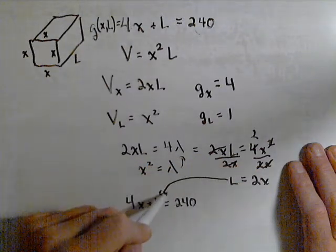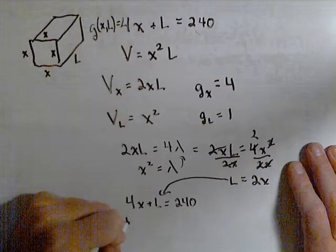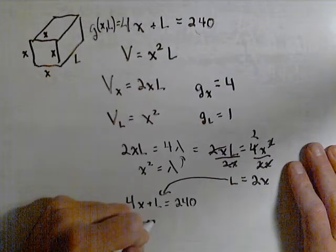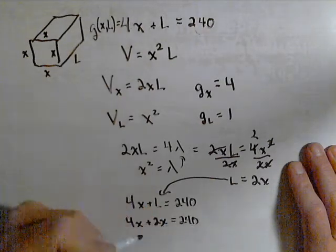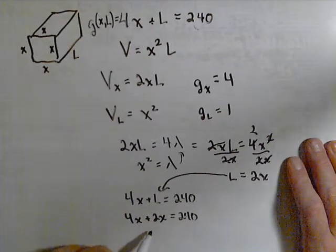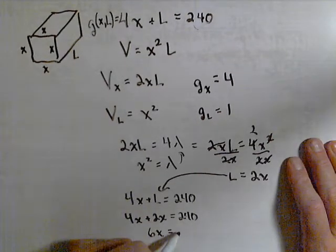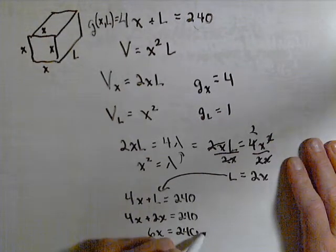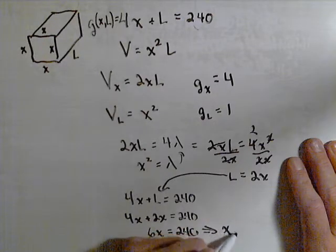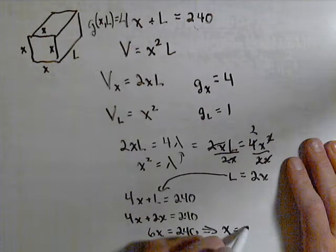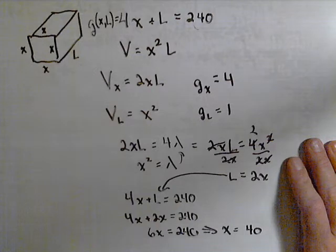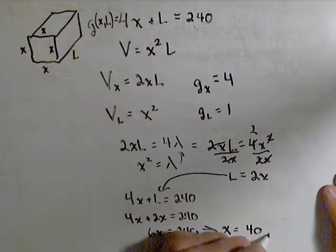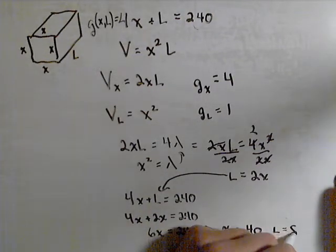Let's sub that into our constraint. So 4x plus 2x equals 240. We get 6x equals 240 or dividing, we get x equals 40. We also know that L is double x, so that means L has to equal 80.